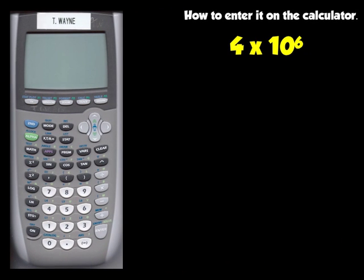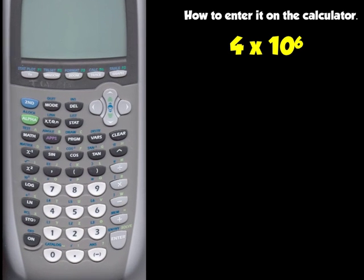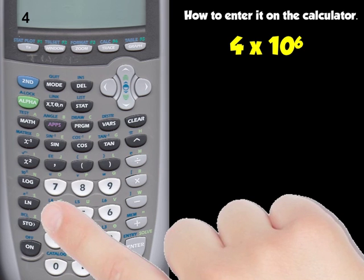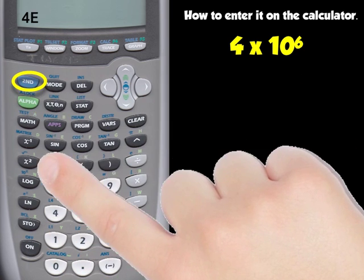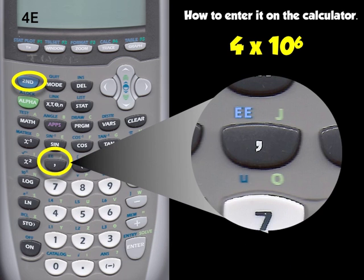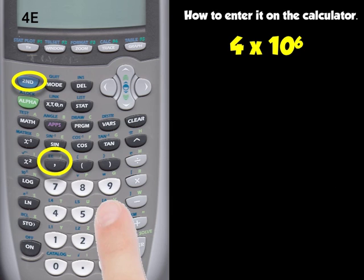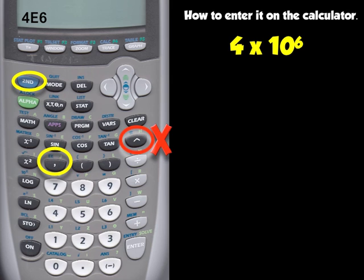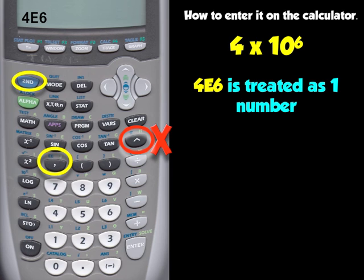Now let's look at how to enter scientific notation on the TI calculator — this works on a TI-81, TI-82, TI-83, TI-84, or TI-89. To enter 4 times 10 to the 6, press the number 4, then press 2nd and go to the comma key — above the comma key is EE. The calculator is color-coded so the blue matches 2nd and EE. An E appears on the calculator screen, then type 6. That E attaches the 4 and the 6 together as one number. Do not use the caret symbol that raises things to a power — that is the wrong thing to do.